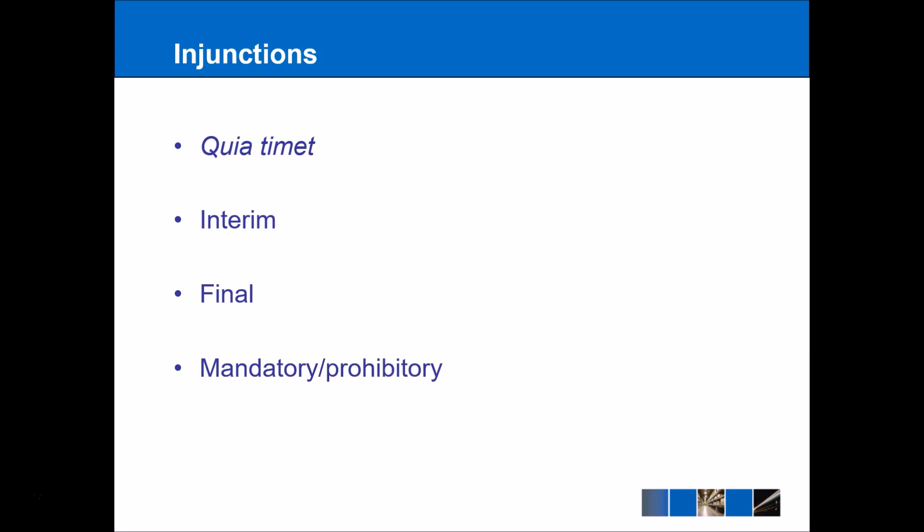Starting with quia timet injunctions — this is where an injunction is awarded before the case is even heard, basically anticipating that the defendant is going to commit a tort in the future. If the tort is very serious and there is a high likelihood the defendant will commit it, a quia timet injunction may be a valuable way of stopping that person publishing something defamatory, for example. Interim injunctions are for when the case is actually ongoing, and the court will put the situation in stasis to stop it progressing further until a final decision can be made.